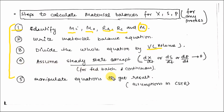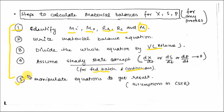Step 4: assume the steady state concept — for fed batch it is quasi steady state, and for continuous it is the steady state approach, meaning dx/dt, ds/dt, and dp/dt all equal zero. Step 5: manipulate the equation to get the result. These are the assumptions used in the CSTR or fed batch system.